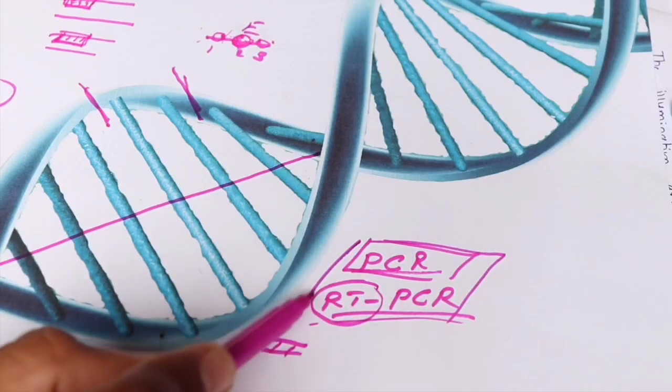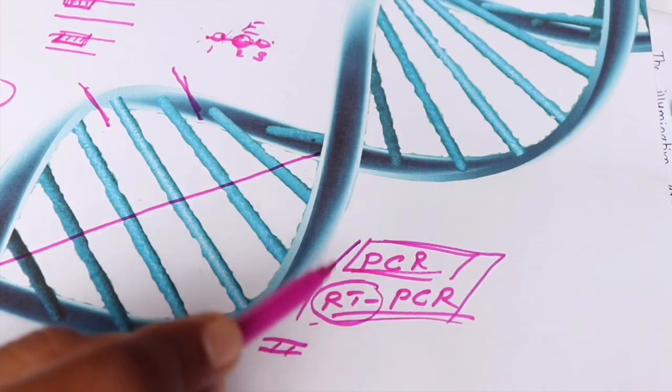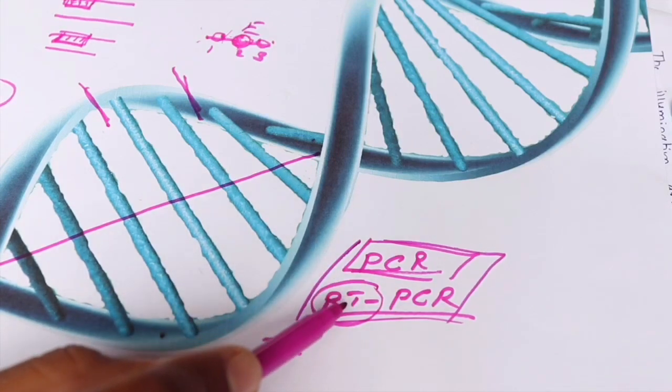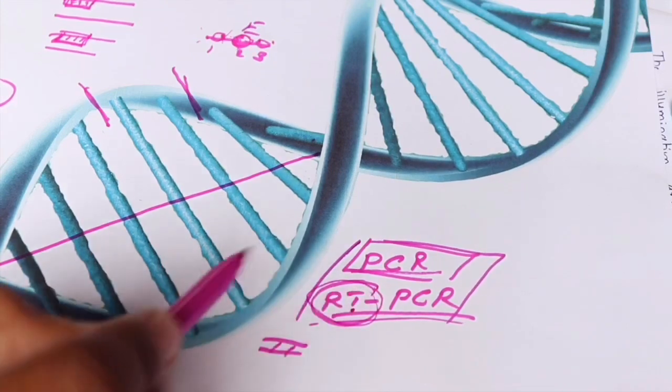We have to convert the RNA into DNA. So the enzymatic reaction takes place from the swab which is collected or secretion which is collected, and if it has a virus or RNA, that will convert it into DNA. So that is the reverse transcription.